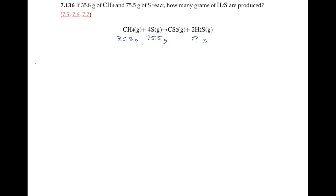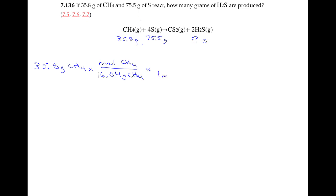Let's start with methane. We have 35.8 grams of methane. For every 35.8 grams, we'll calculate the number of moles. We know that there is 16.04 grams of methane in one mole of methane — I calculated the molar mass from the periodic table. Then from our balanced equation, there's one mole of methane.